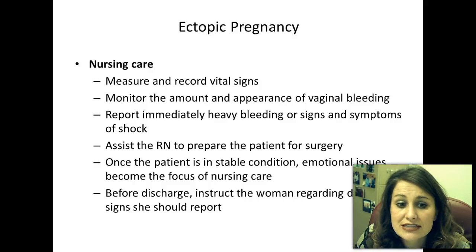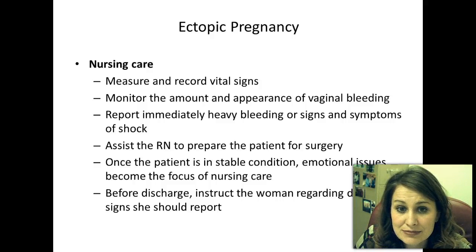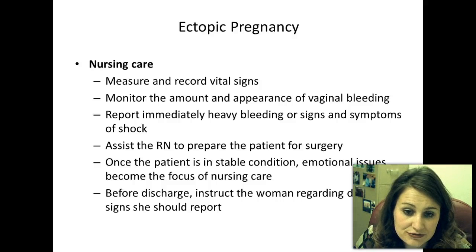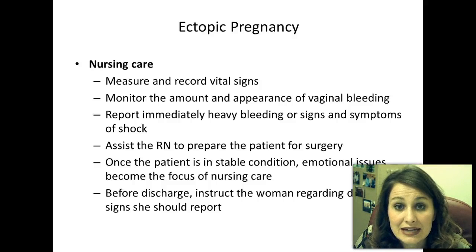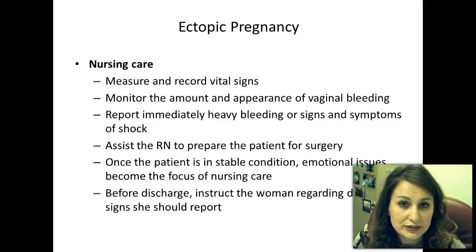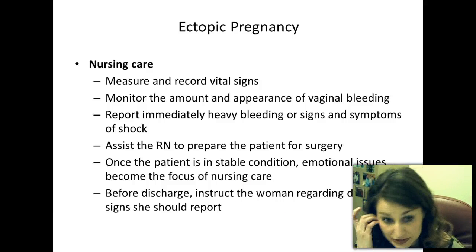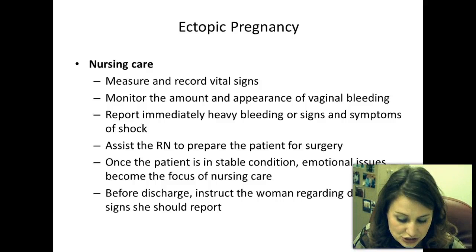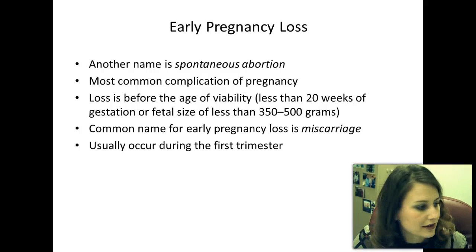Nursing care: measure and record vital signs, monitor the amount and appearance of vaginal bleeding, and report immediately any heavy bleeding or signs and symptoms of shock. Assist the RN to prepare the patient for surgery. Once stable, address emotional issues—she has lost a baby, so be kind and compassionate. Encourage grief counseling or a grief-share group. Before discharge, instruct the woman regarding danger signs to report, such as high temperature or vaginal bleeding.